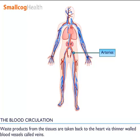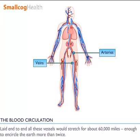Waste products from the tissues are taken back to the heart via thinner-walled blood vessels called veins. Laid end-to-end, all these vessels would stretch for about 60,000 miles, enough to encircle the earth more than twice.